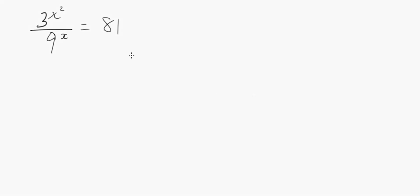In this video we are going to learn how to solve this Olympiad math question easily. Okay, so let's get started. Now we have 3 to the power of x squared over 9 to the power x equals 81. So once you understand how to...